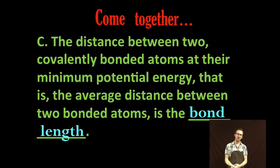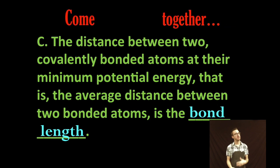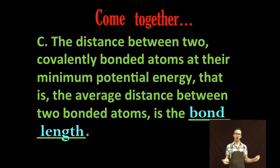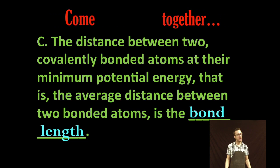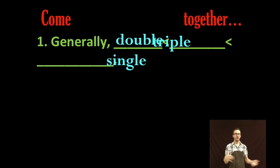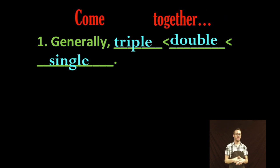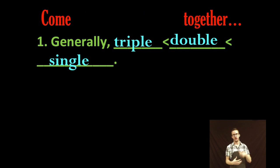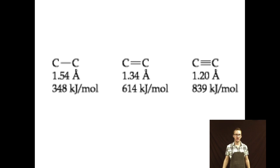A couple of last important characteristics of covalent compounds is first bond length, which is just the distance between two covalently bonded atoms at their minimum potential energy. And generally speaking, your triple bonds are shorter than your double bonds, which are shorter than your single bonds. Here's a terrible image, but shows you essentially the distance in angstroms between two carbon atoms that are single, double, and triple bonded respectively. Notice that in the single bond, the distance or bond length is 1.54 angstroms, in a double bond 1.34, and the shortest 1.20 angstroms in your triple bonded carbon atoms.